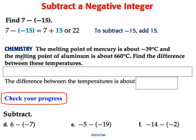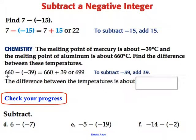Here's an example from chemistry. It says the melting point of mercury is about minus 39 degrees C. The melting point of aluminum is about 660 degrees C. Huge difference there. Find the difference between these temperatures. So when it says find the difference, that means we're going to be subtracting them. So mathematically our equation would look like 660 minus a negative 39. So minus a minus is going to give us plus 39, and so we add the numbers and we get 699. The difference is about 699 degrees C.